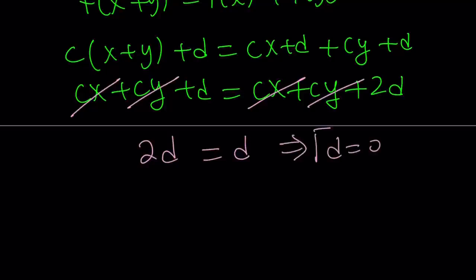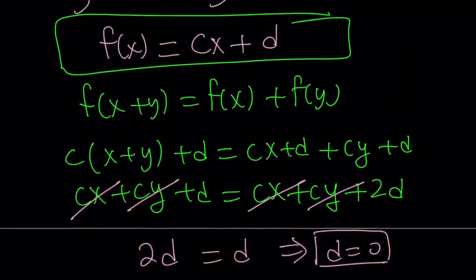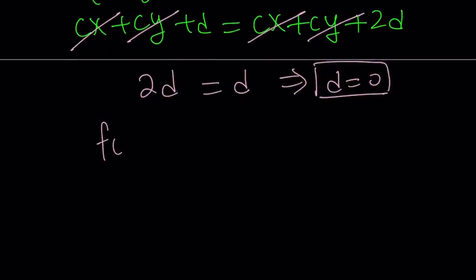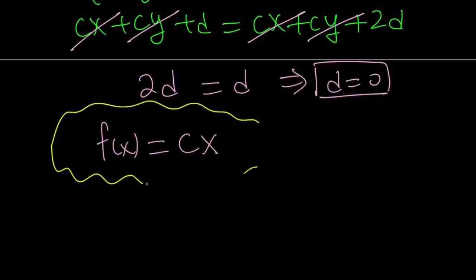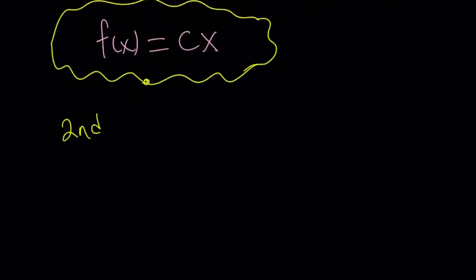So 2d = d means d must be zero. Going back to f(x) = cx + d, since d = 0, we get f(x) = cx. So f is not just a linear function — it's one that passes through the origin, with y-intercept zero. We don't get any further restriction on c. You can verify this satisfies the original equation. Now let's talk about the second method.